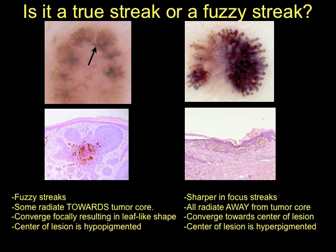In contrast, the lesion on the right is a melanoma. The streaks in this melanoma are sharper in focus, they all radiate away from the tumor, they converge towards the geometric central part of the lesion, and the center of the lesion is hyperpigmented and has a blue-white veil.